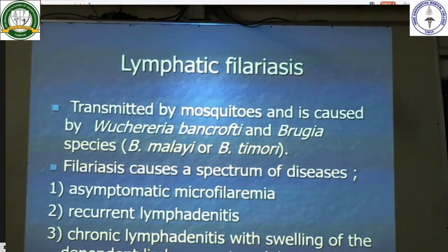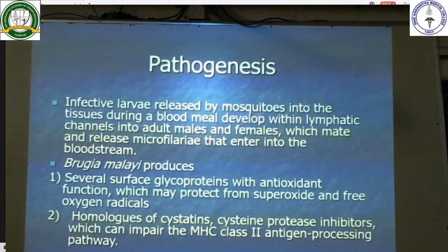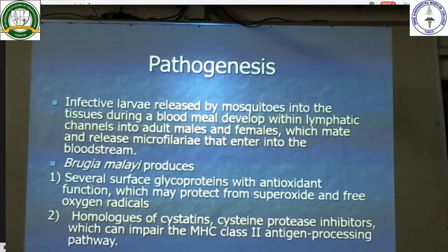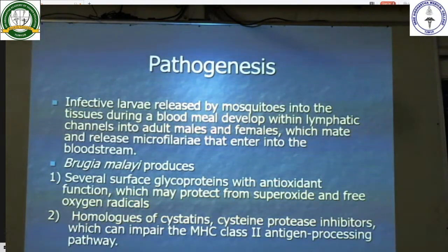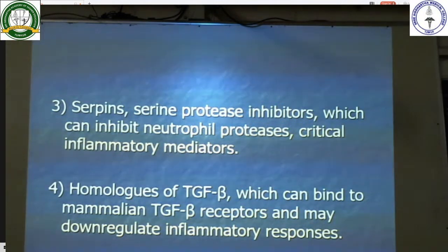Lymphatic filariasis is transmitted by mosquitoes and caused by Wuchereria bancrofti or Brugia malayi species. Filariasis causes a spectrum of disease including asymptomatic microfilaremia, recurrent lymphadenitis, chronic lymphadenitis with swelling of the dependent limb or scrotum, and tropical pulmonary eosinophilia. Pathogenesis: infective larvae released by mosquitoes during a blood meal develop within lymphatic channels into adult males and females, which mate and release microfilaria that enter the bloodstream. Brugia malayi produces several surface glycoproteins with antioxidant function protecting from superoxide free oxygen radicals; homologs of cystatin — cysteine protease inhibitors — which can impair the MHC class II antigen processing pathway; serpin serine protease inhibitors which can inhibit neutrophil proteases and critical inflammatory mediators; and homologs of TGF-beta which can bind to mammalian TGF-beta receptors and may downregulate inflammatory responses.